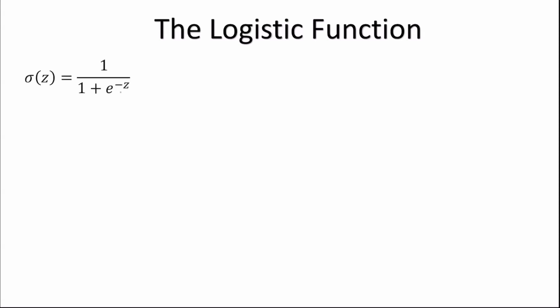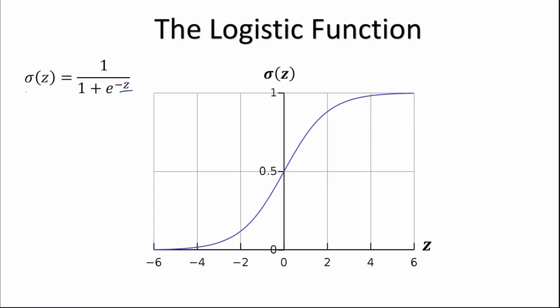The logistic function takes the form σ(z) = 1 / (1 + e^(−z)), where z is the value produced from our linear regression function. When plotted, σ(z) takes a value between 0 and 1, essentially converting any value into a sort of probability. σ(z) equals 0.5 when z equals 0. We can use this as a boundary: any value of σ(z) greater than 0.5 maps to one label, and any value less than 0.5 maps to another label.